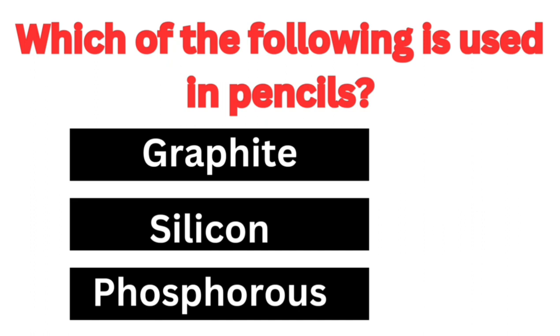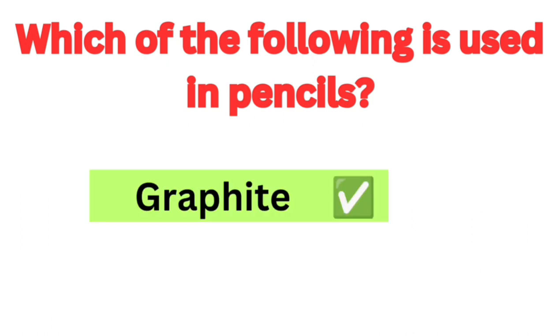Which of the following is used in a pencil? Graphite, silicon, phosphorus. Answer: The answer is graphite. Correct answer.